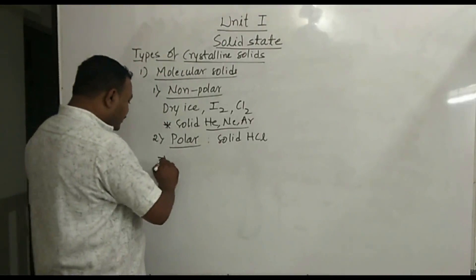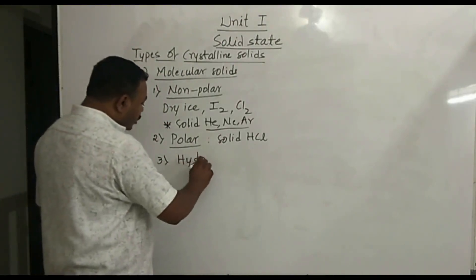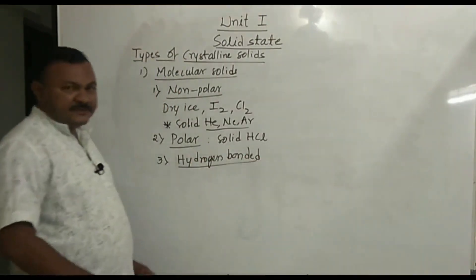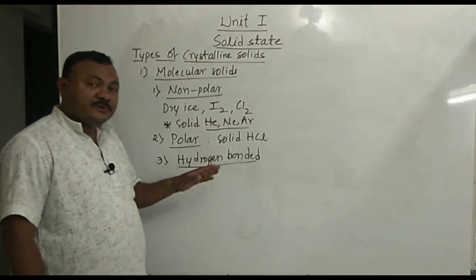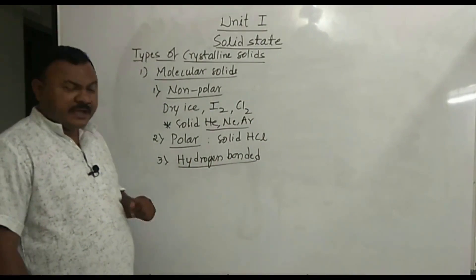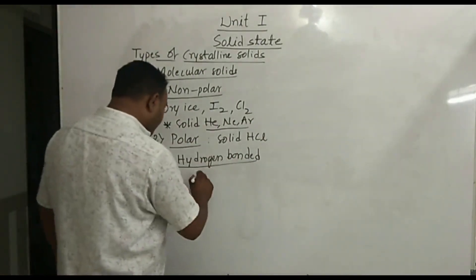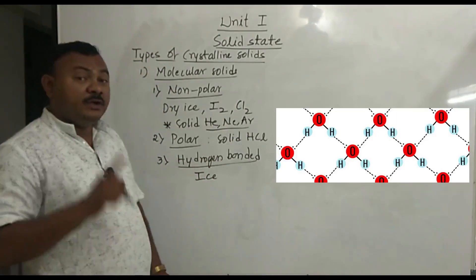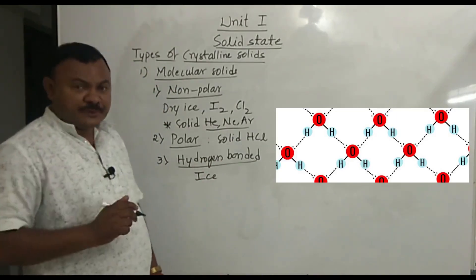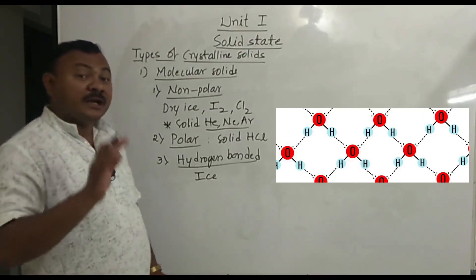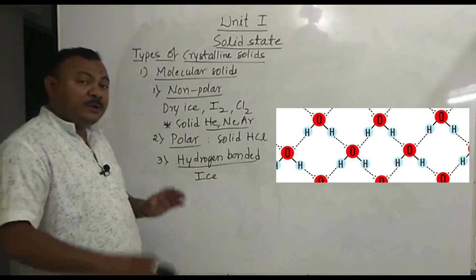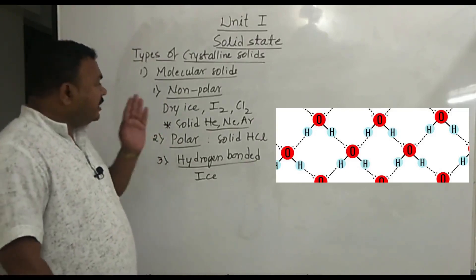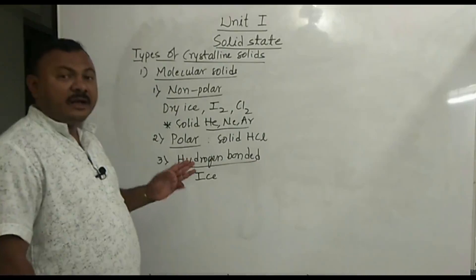The third type of molecular solid is hydrogen bonded molecular solids — molecular solids where molecules are held by hydrogen bonds. The best example is ice, where each water molecule is surrounded by two intermolecular hydrogen bonds. Such solids are called hydrogen bonded molecular solids. So in the first type of crystalline solid — molecular solids — we learned three subtypes: non-polar, polar, and hydrogen bonded.